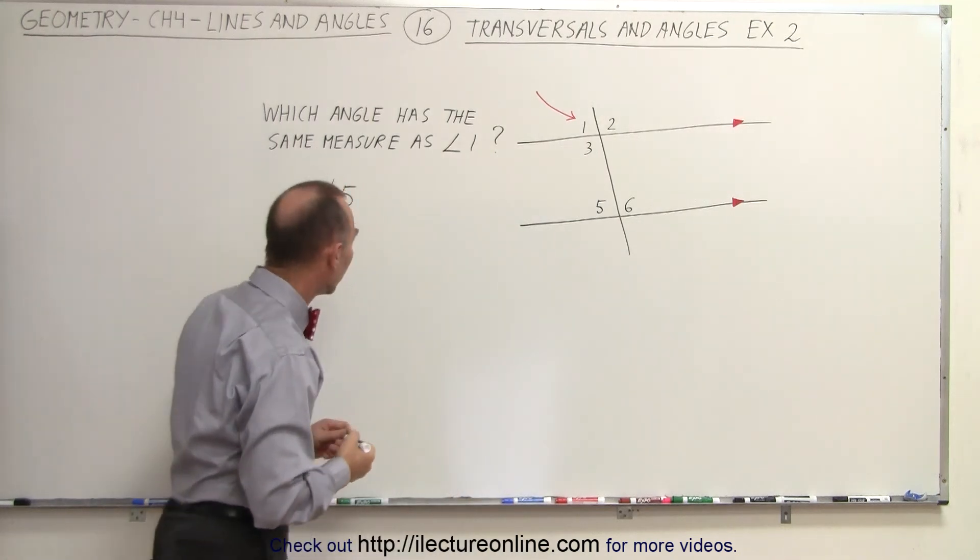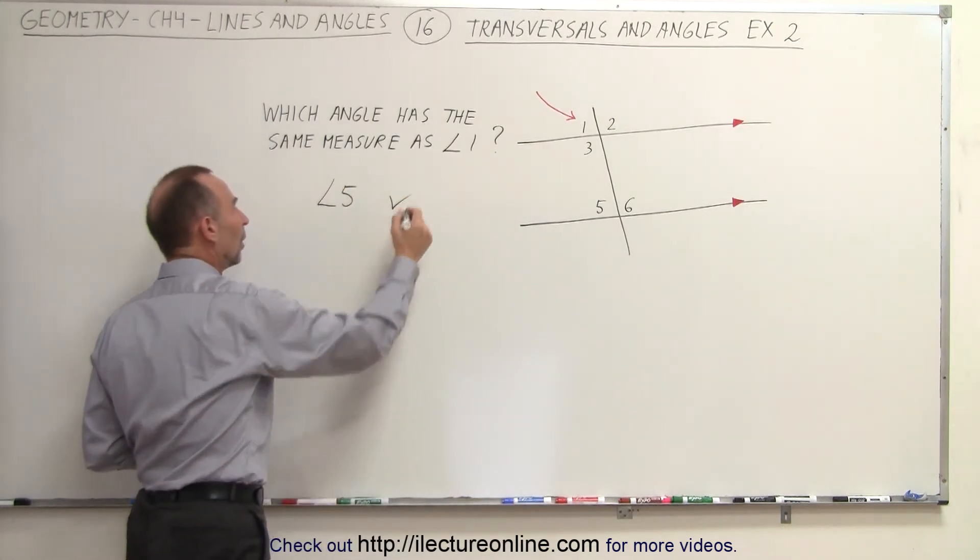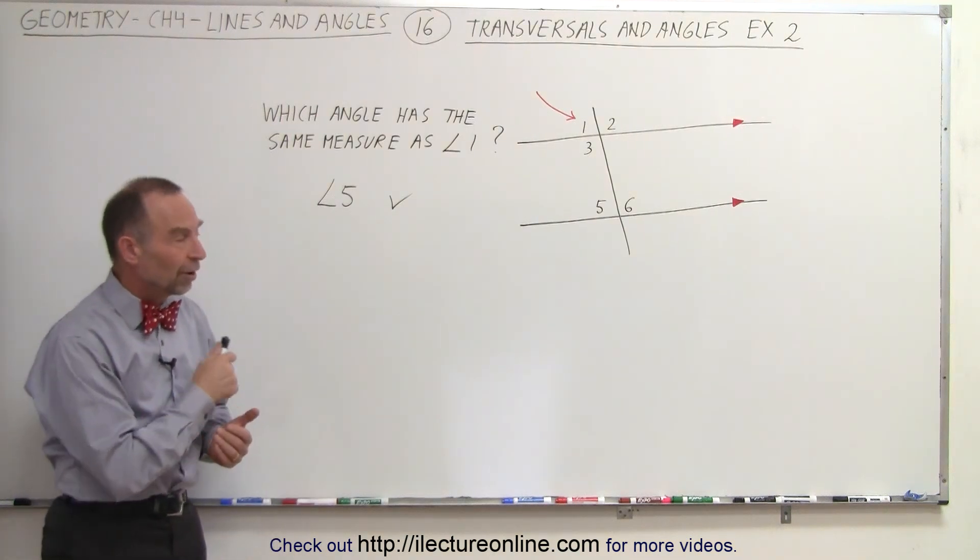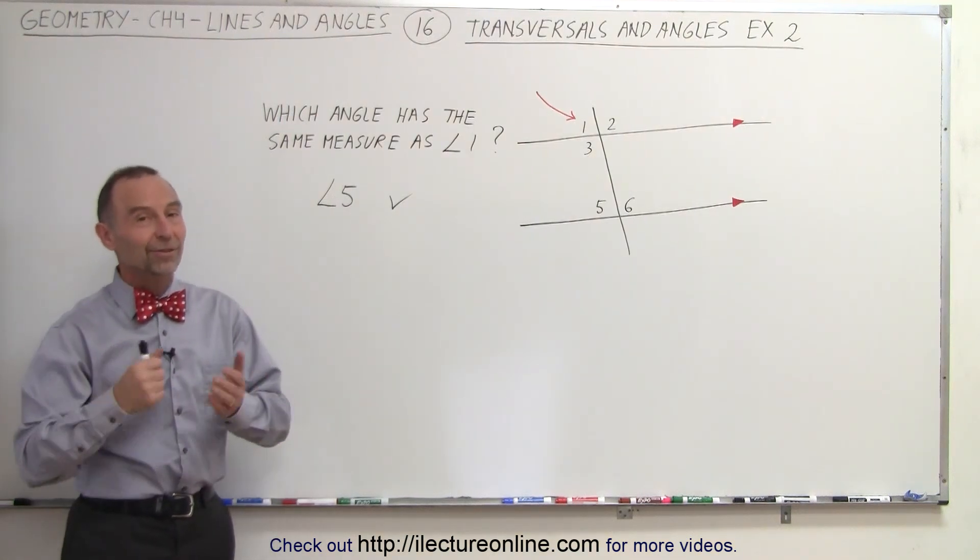And so there's only one possible answer. The measure of angle 5 equals the measure of angle 1, and that is how it's done.